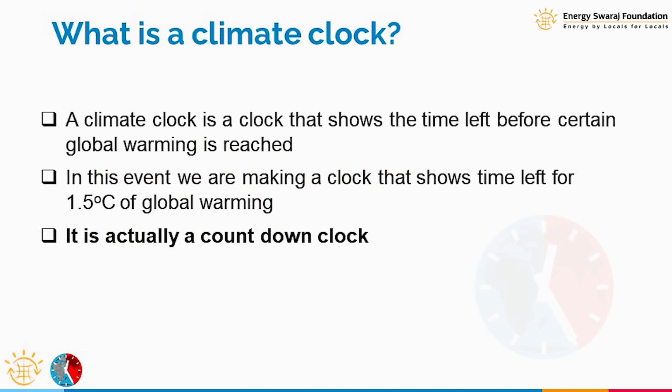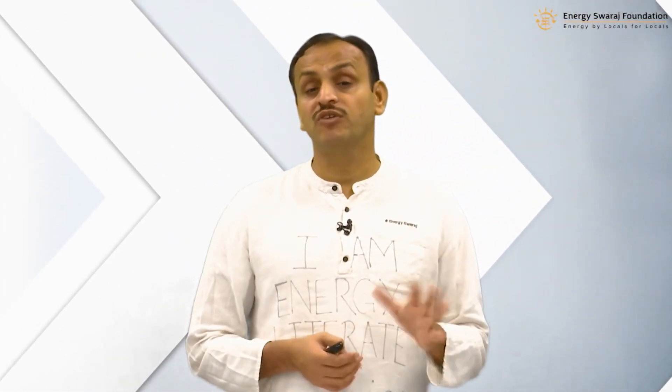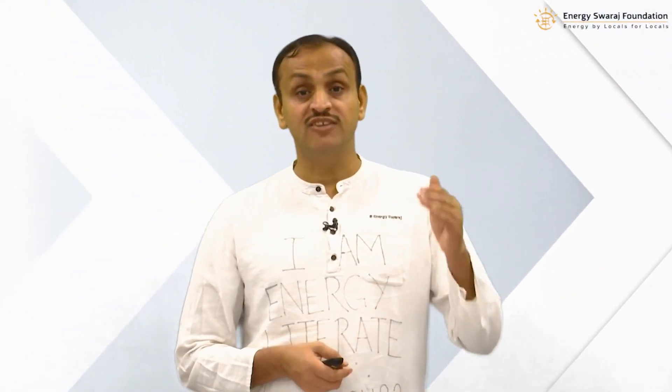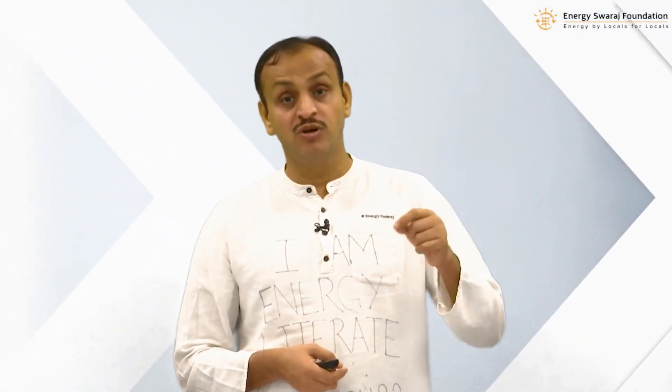A climate clock is a clock that tells you how much time is left before we touch the global warming of a certain temperature. In this training, we are learning the climate clock for 1.5 degrees centigrade of global warming, because that is the next number we are going to touch. Right now it is already about 1.1 or 1.15 degrees centigrade of global warming.